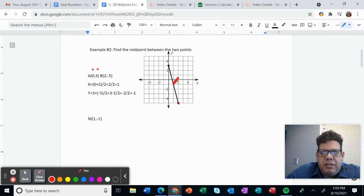As you can see we have 1, negative 1, 1, negative 1, the coordinates for the midpoint.